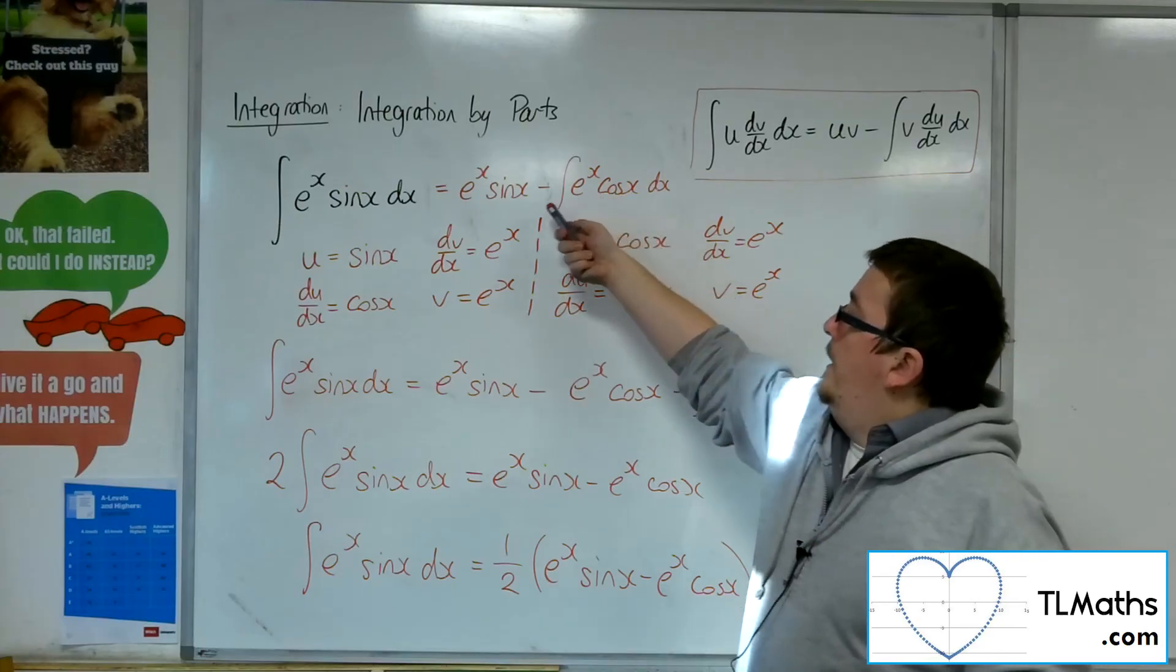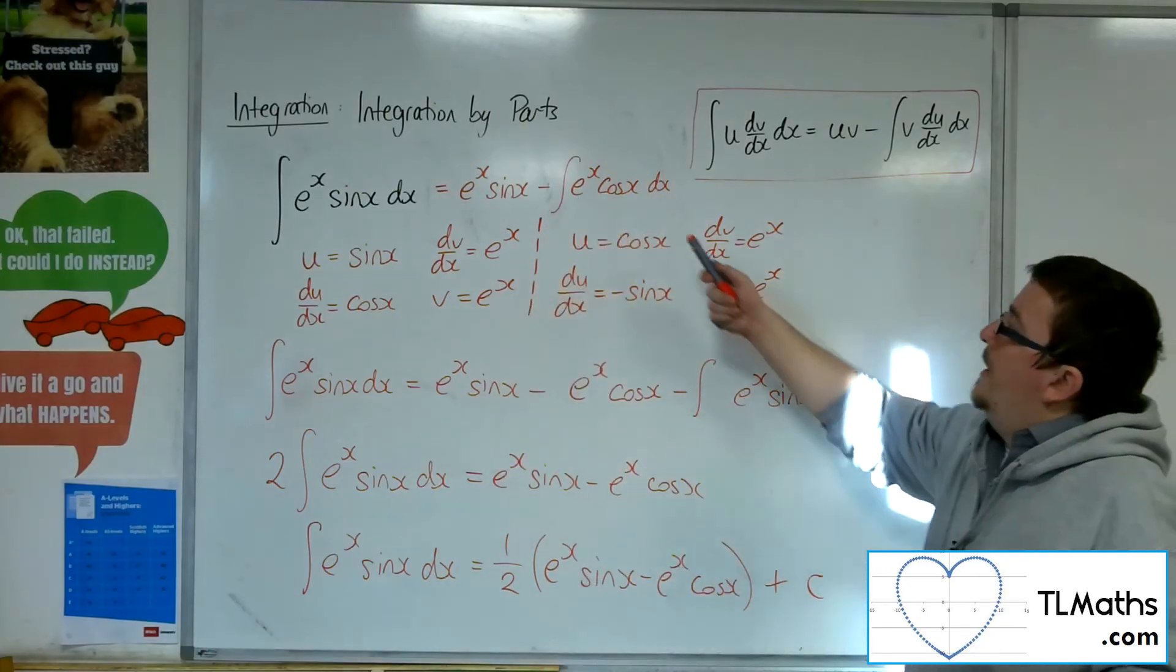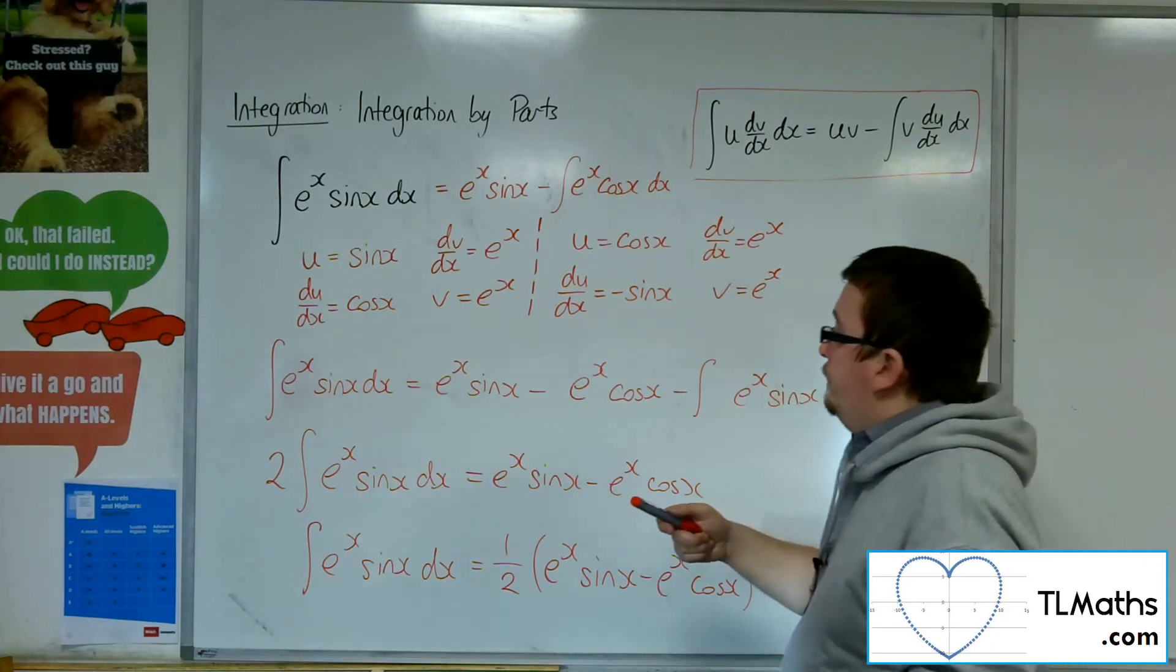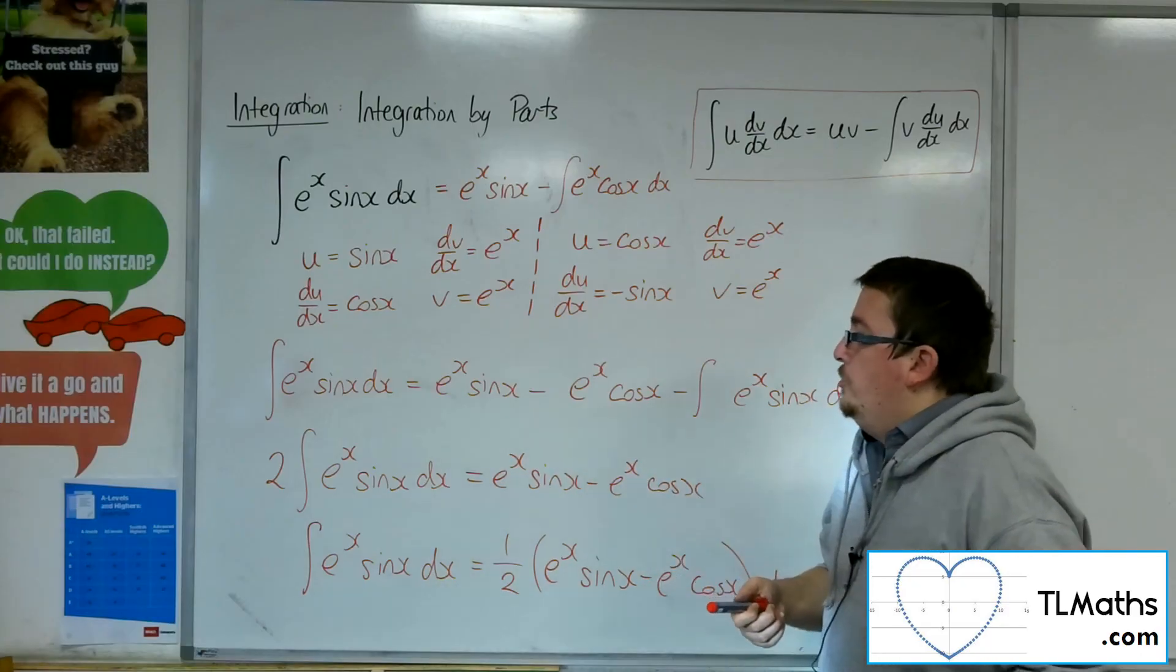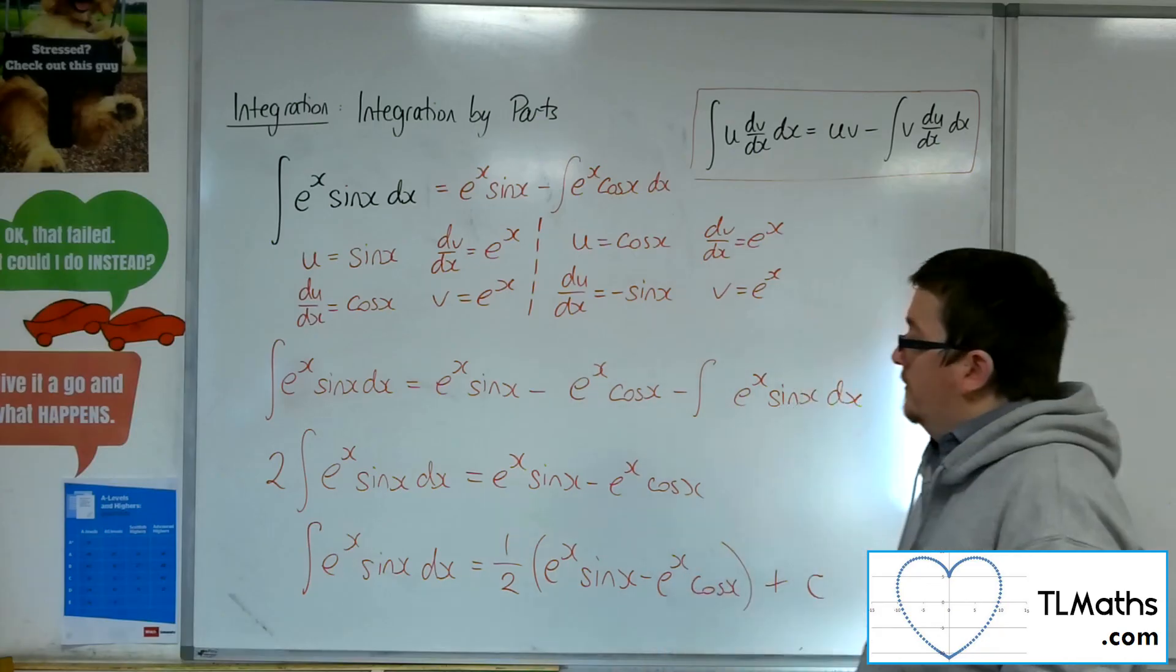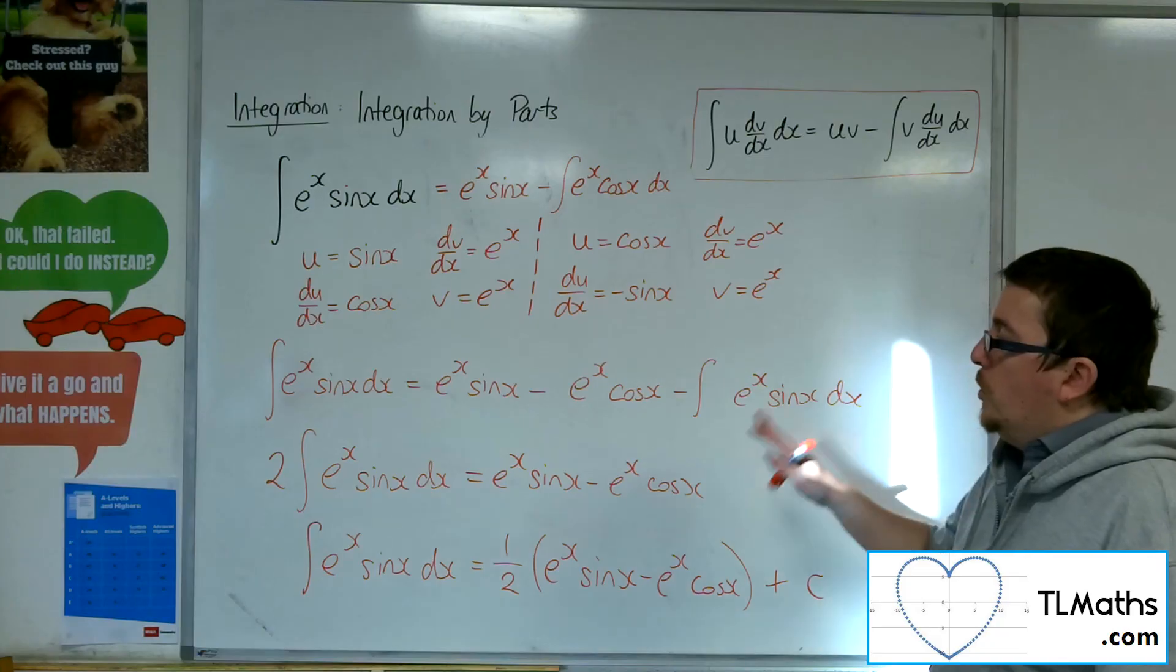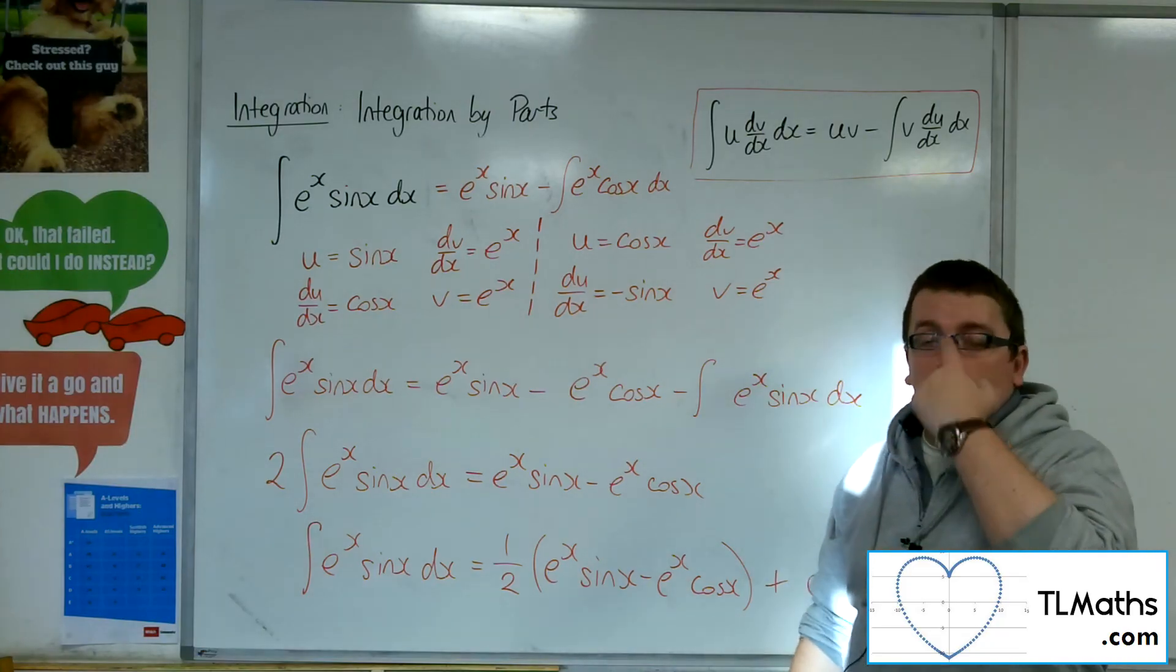And the e to the x sine x cancels, and then you get this integral left over, and then that integrates back, and it cancels out that term as well. And you just get left with, like, 1 equals 1, effectively. So it really requires the trick to have any kind of end point.